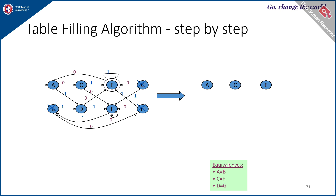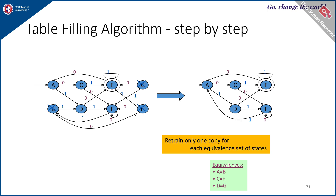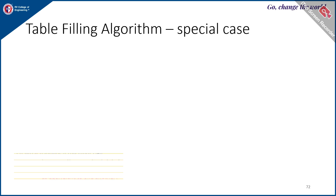The retained states are A, C, D, E, and F. Since A is equivalent to B, B is replaced by A. Since C is equivalent to H, H is replaced by C. Since D is equivalent to G, G is replaced by D. Retaining only one copy for each equivalence set gives the minimized DFA.